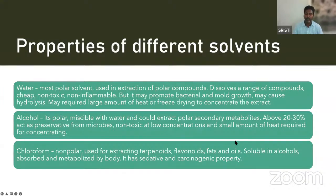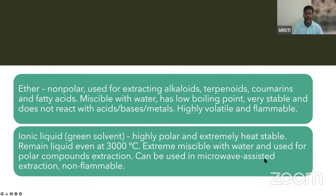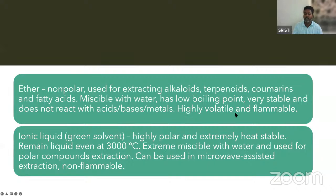Chloroform is a non-polar solvent used for extracting secondary metabolites like terpenoids, flavonoids, fats, and oils. It is soluble in alcohols and metabolized by boiling. It also has sedative and carcinogenic properties, so it should be handled with care. Ether is a non-polar solvent used for extracting alkaloids, terpenoids, coumarins, and fatty acids. It is miscible with water, has a very low boiling point, is very stable, and does not react with acids, bases, or metals — an important feature when storing extracted products.